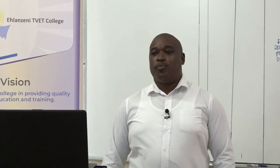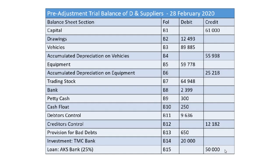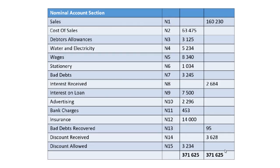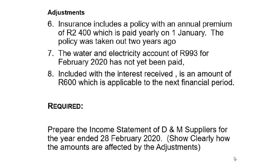In order to prepare the income statement, we need different things. The first thing is a pre-adjustment trial balance. In our pre-adjustment trial balance you'll get two sections: the balance sheet section, and the nominal account section. When doing the income statement, we focus mainly on the nominal account section, because we use it to determine the financial performance. Thirdly, we need the adjustments, because we need to adjust certain accounts.